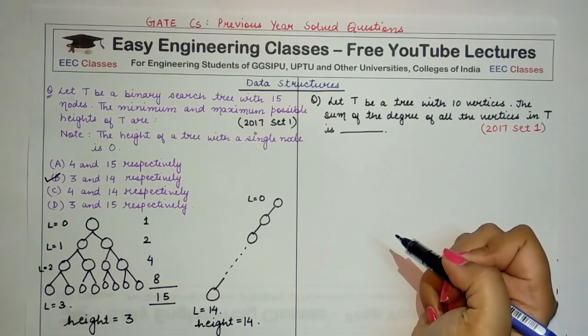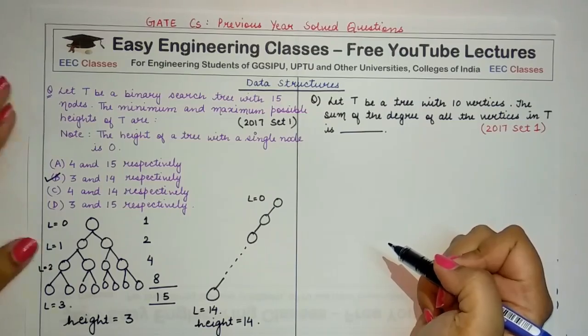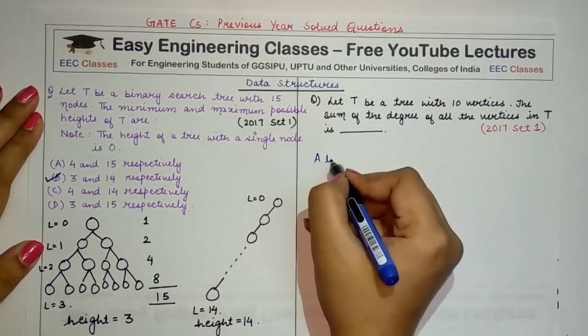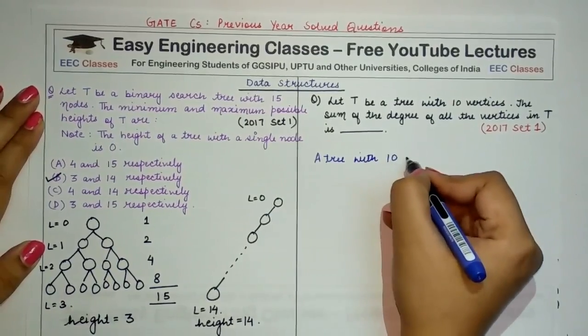So we know that there is a formula or a theorem that the sum of degrees of vertices is equal to twice the number of edges. So a tree with 10 vertices will have...